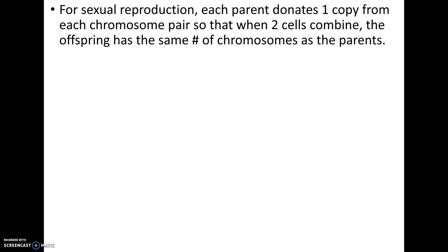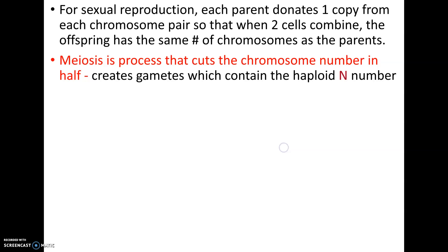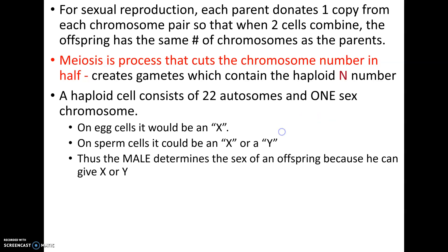For sexual reproduction to occur, each parent gives only one copy from their chromosome pair, and which copy is passed is random. When fertilization happens, the chromosome number is restored. The whole point of meiosis is that it is the process that cuts the number of chromosomes in half — from 2n to n — creating gametes which can then fuse together.